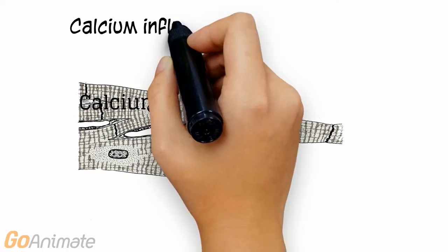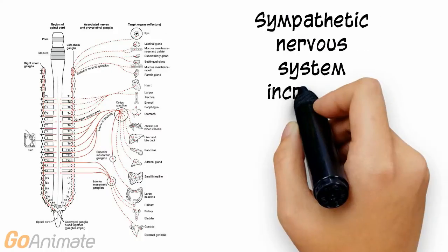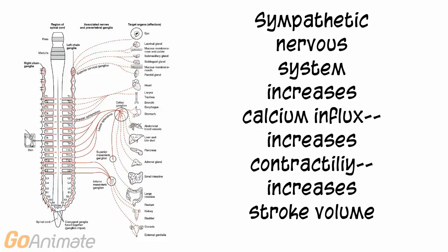The more calcium that enters the cardiac muscle cells, the stronger the contraction. The sympathetic nervous system increases calcium influx, which increases contractility, which in turn increases stroke volume.